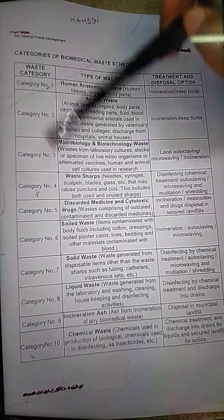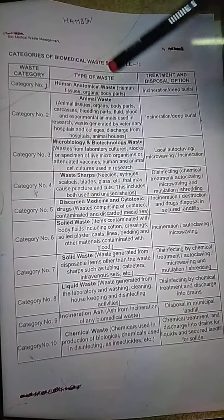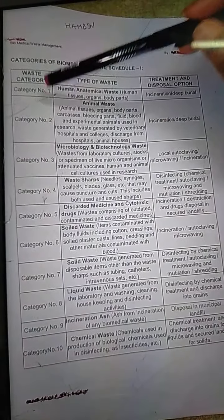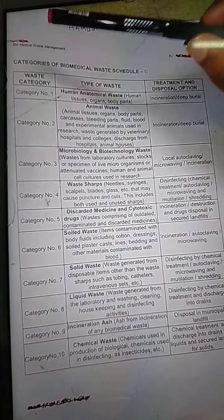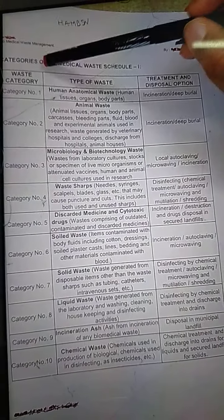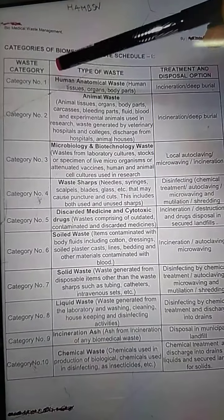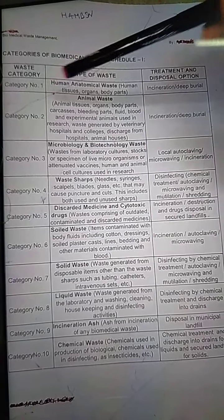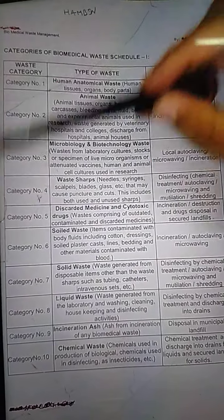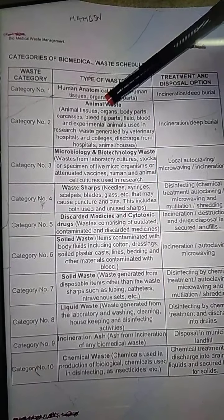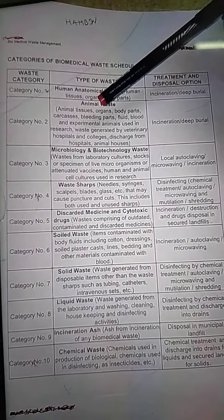Category 9 will have incineration ash. Category 10 will have chemical waste. In order to have proper identification, because we cannot mix sharps with different kinds of organs, we store all these different category wastes in different color-coded containers or plastic packs. This is done according to schedule 2, and now we are going to see what the different color codings are with their categories.